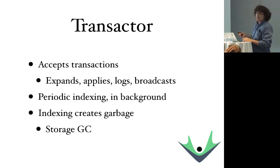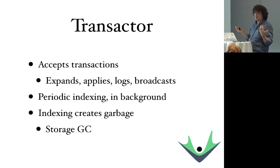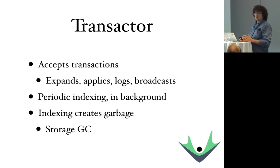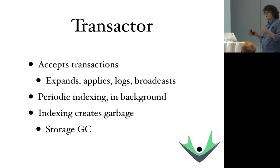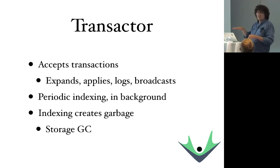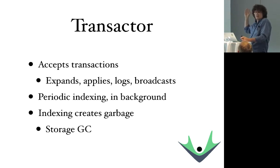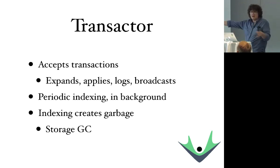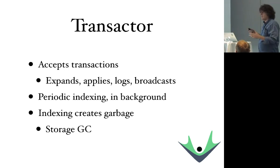At the point the transactor has an acceptable transaction, it logs it — at that point the transaction happened, it's been made durable. It then broadcasts the change to everybody who's connected, and obviously to the person who issued the transaction so they know it succeeded. The transactor also does indexing in the background. The indexing itself creates garbage. Using storage immutably and using it to represent persistent data structures creates garbage, but the beautiful thing about this garbage is it's not interleaved in the middle of another file. When we make a new index, nodes of the old tree no longer referenced are simply deleted wholesale — no big long rewrites like in Cassandra.